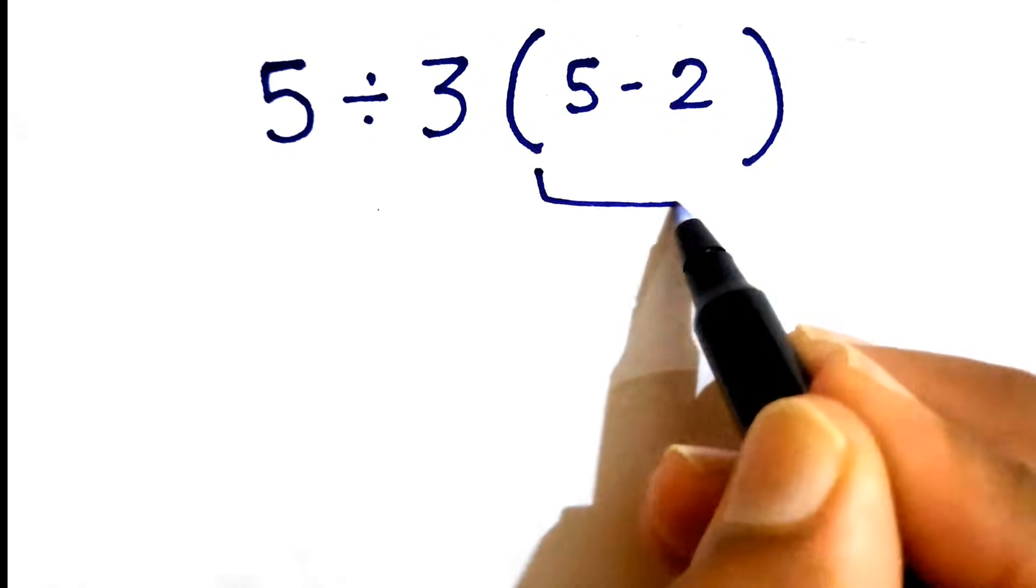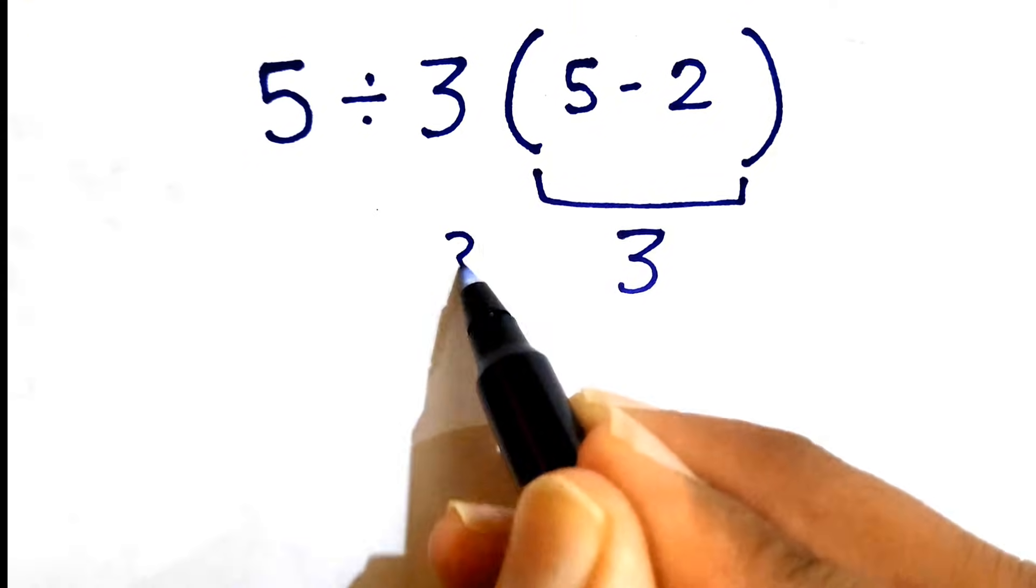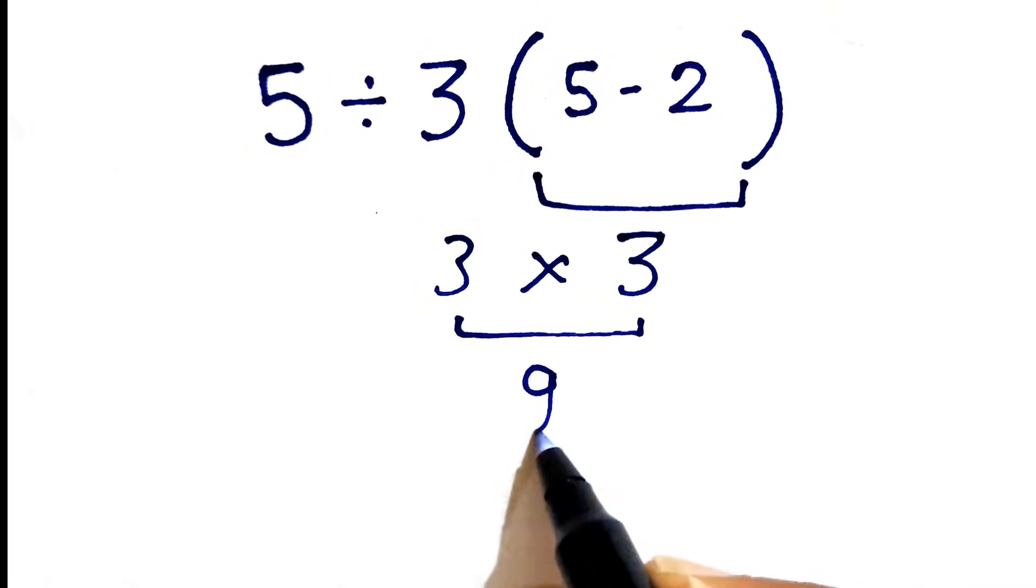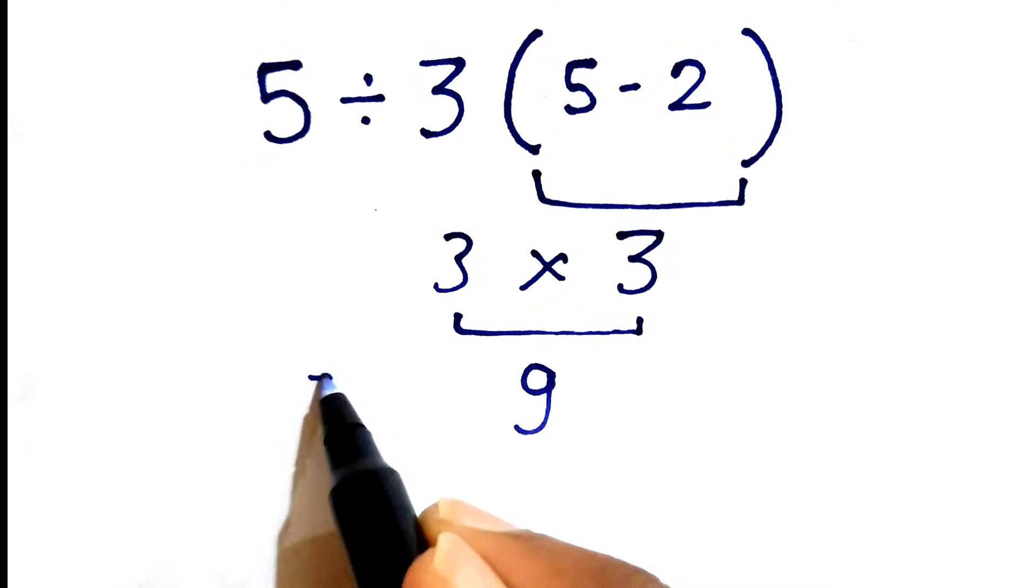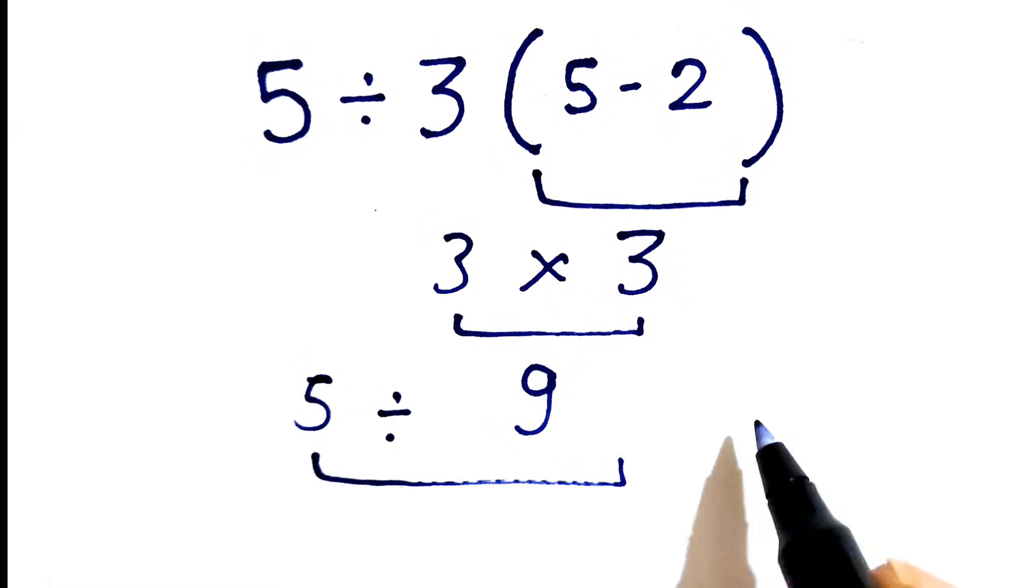5 minus 2 gives us 3, and this 3 times 3 gives us 9. Now we have 5 divided by 9. 5 divided by 9 can be written as 5 over 9.